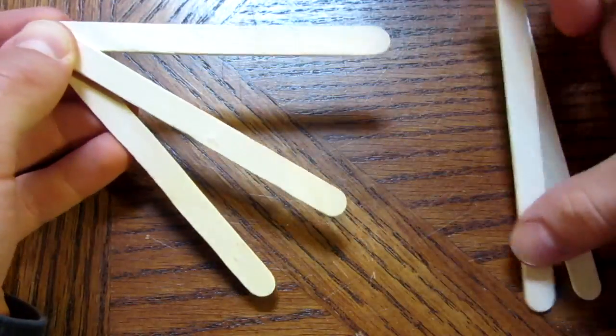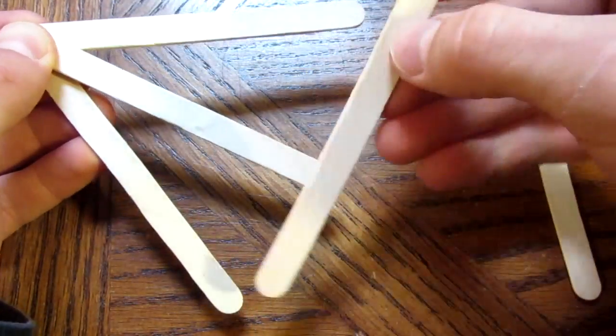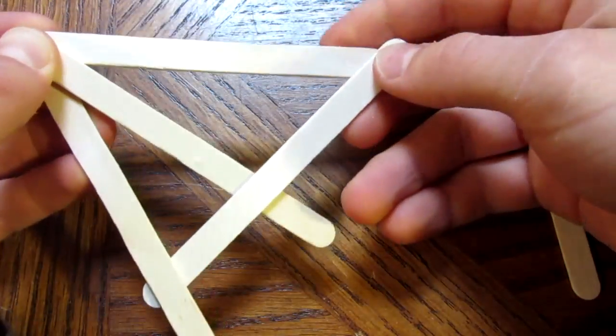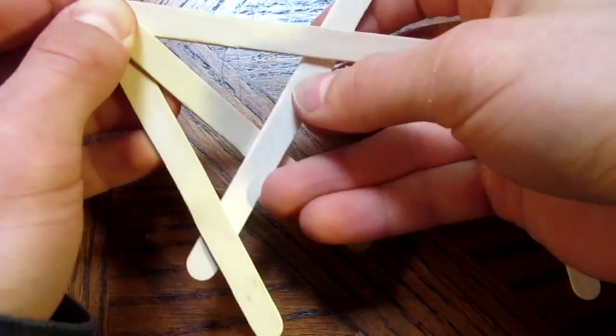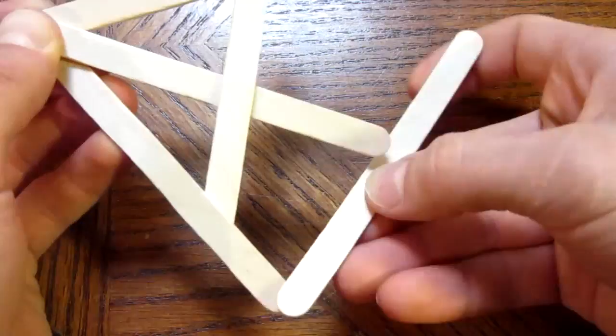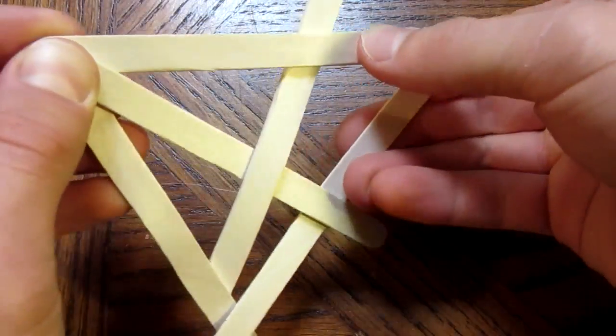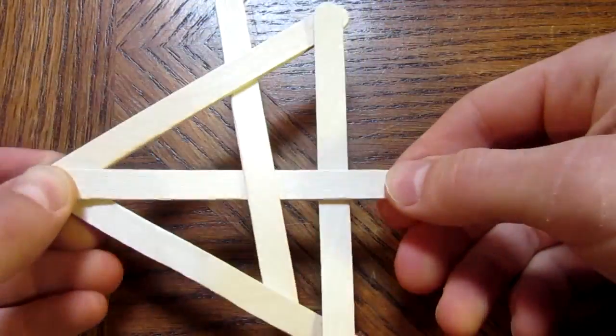And then with the other two, weave them first on top of the middle one under the outside ones, and then under the middle one and over top of the outside ones. So it should all stay together like that.